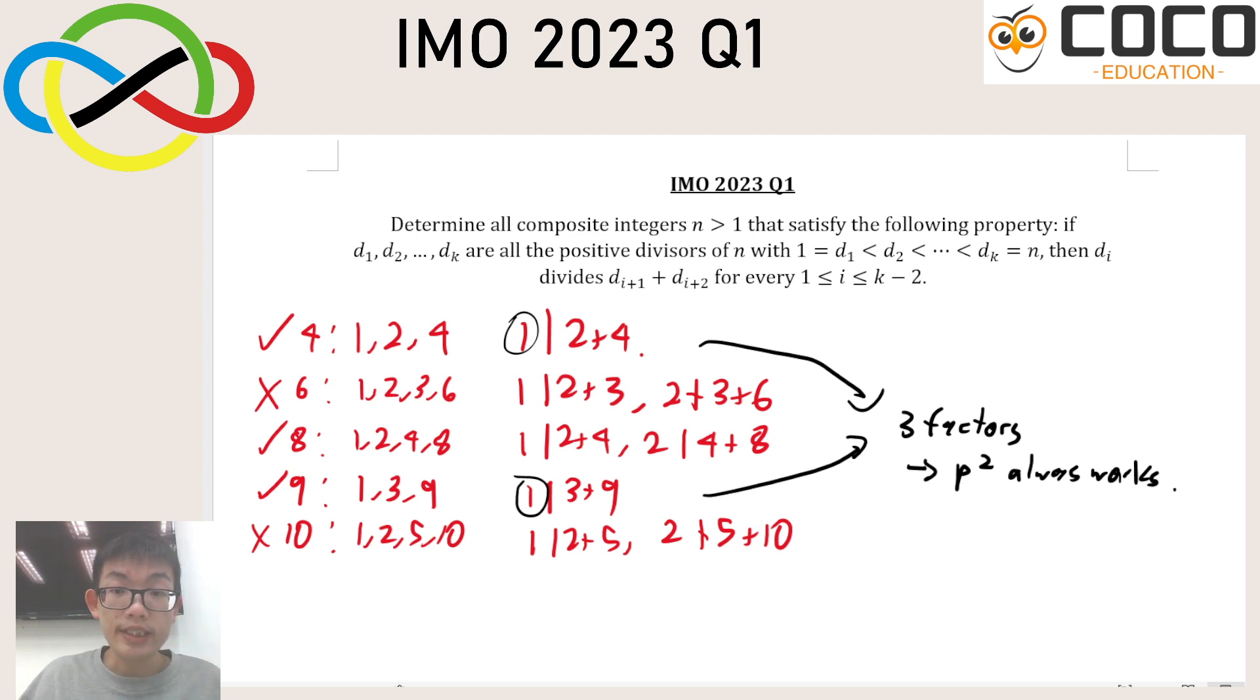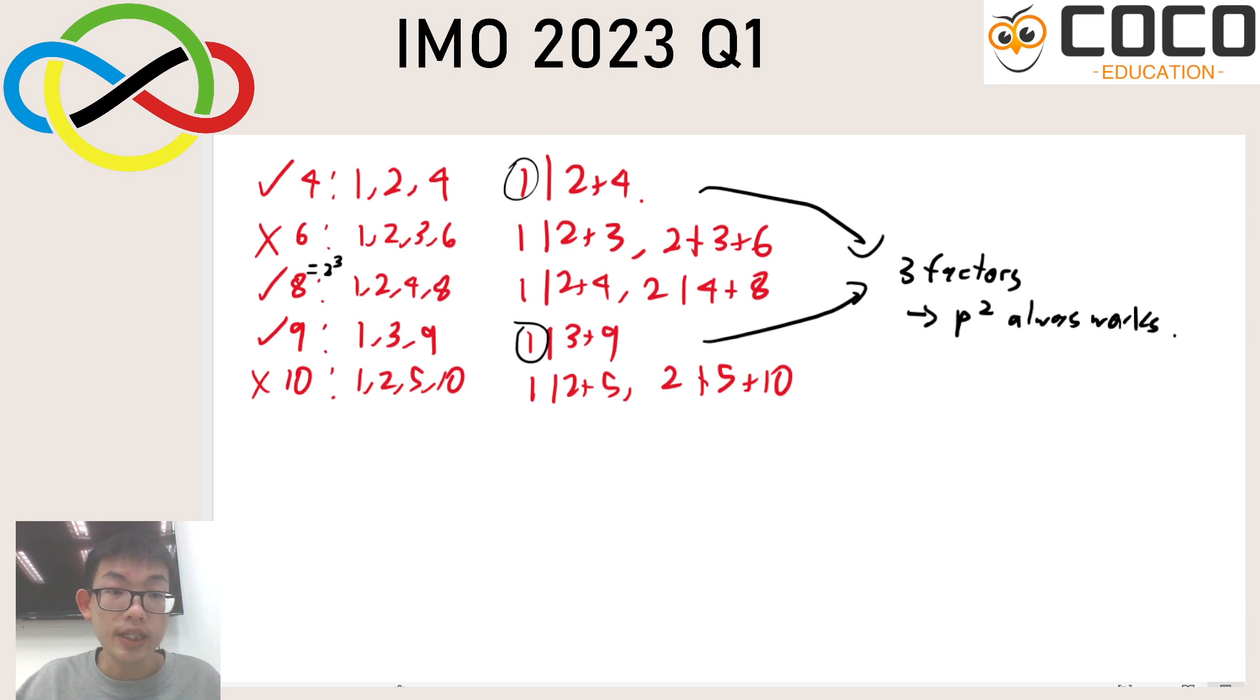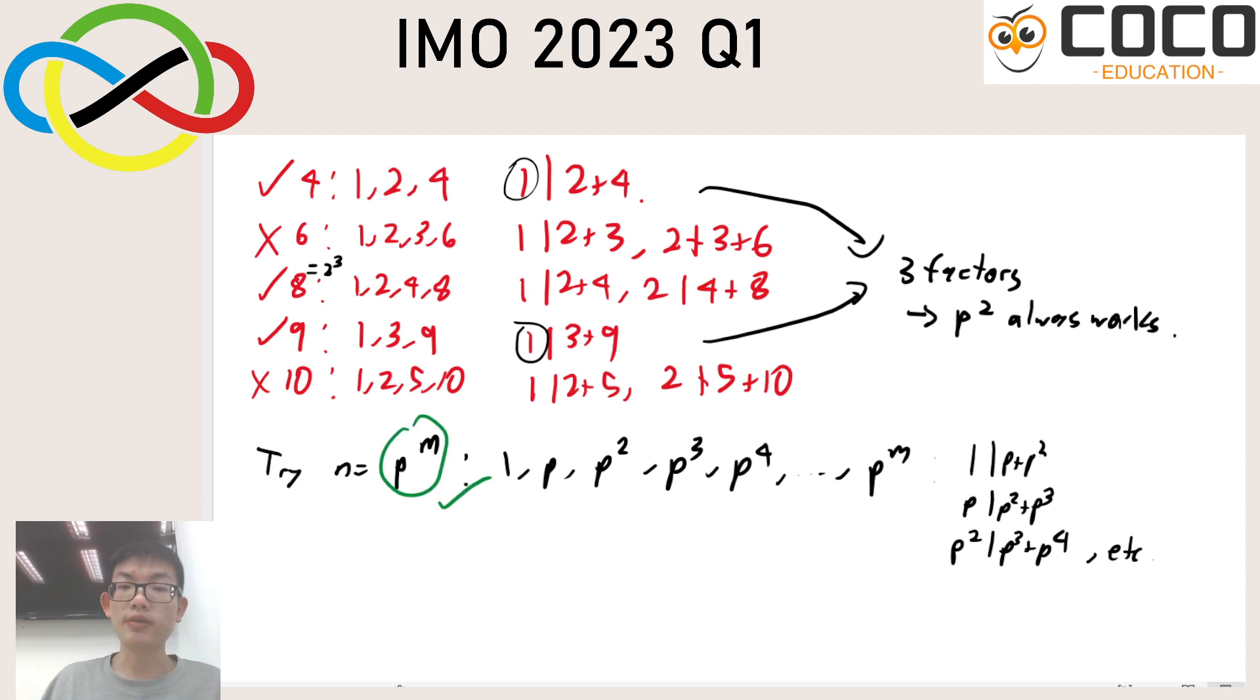If we look at the other one that worked, which is 8, you realize that 8 is actually 2 cubed. And if it's 2 cubed, then it is pretty obvious why it's going to work, because 2 is going to divide 2 squared plus 2 cubed. And so, it's not so surprising that if we were to try something like a power of p, where p is a prime, the factors are going to just be powers of p. And this will definitely work, because 1 divides p plus p squared, p will divide p squared plus p cubed, p squared will divide p cubed plus p to the 4, and so on. And so this also works all the time.